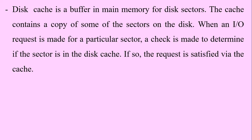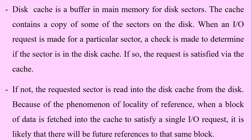The disk cache contains a copy of some of the sectors on the disk. When an I/O request is made for a particular sector, a check is made to determine if the sector is in the disk cache. If so, the request is satisfied via the cache. If not, the requested sector is read into the disk cache from the disk. Because of the phenomenon of locality of reference, when a block of data is fetched into the cache to satisfy a single I/O request, it is likely that there will be future references to that same block.